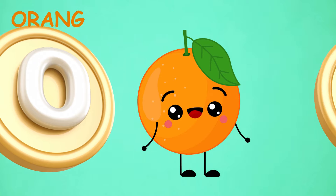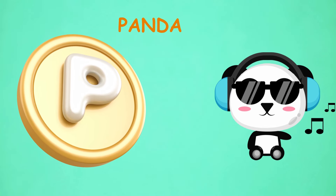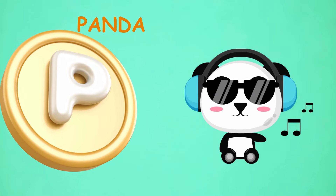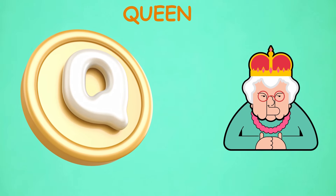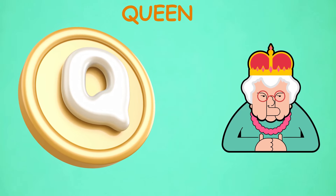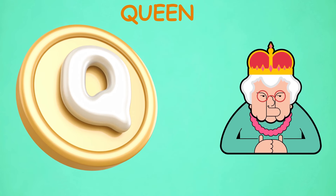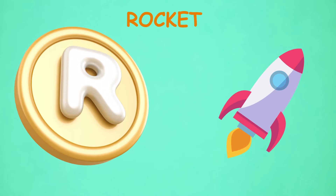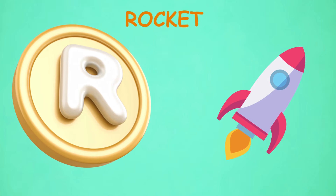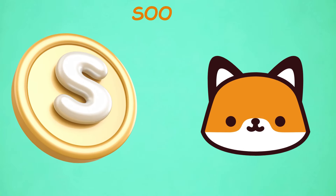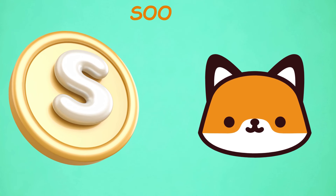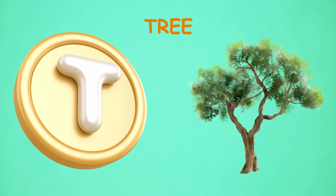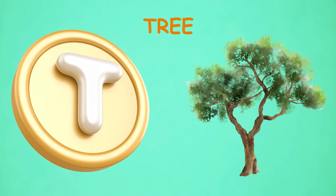P. P for Panda. Q. Q for Queen. R. R for Rocket. S. S for Soap. T. T for Tree.